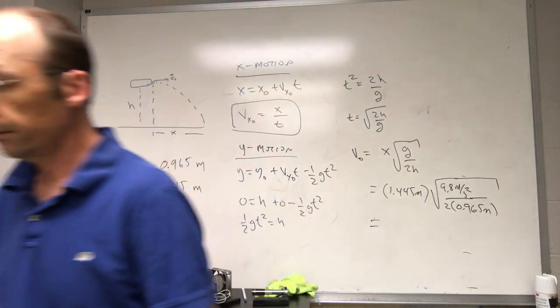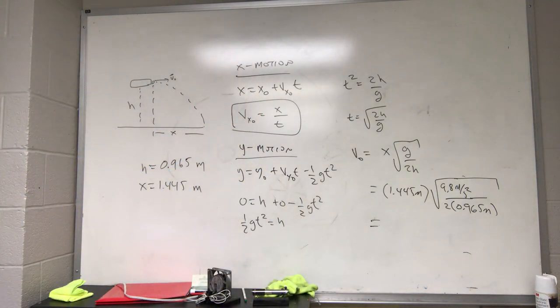I'm going to put this in my calculator, which I have right over here. I'm going to use my computer. I'm still here. Okay, let's see. I have 1.445 times the square root of 9.8, divided by 2 times 0.965.